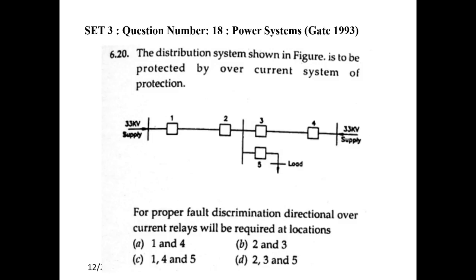Next question: The distribution system shown in the figure is to be protected by an overcurrent protection system. There are two different sources: a 33 kV supply feeding from breaker 1, and another 33 kV supply feeding from breaker 4. Breaker 5 supplies the load. They have asked at which locations directional overcurrent relays will be required for proper fault discrimination — locations 1, 2, 3, 4, and 5 are given.